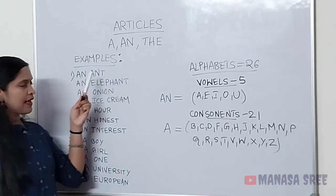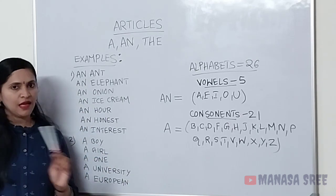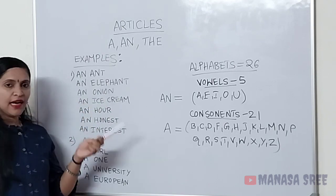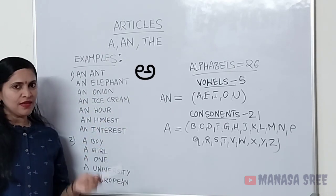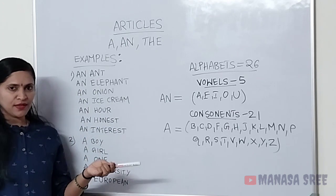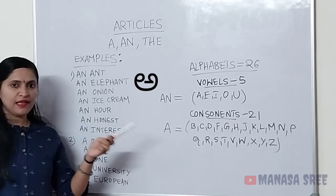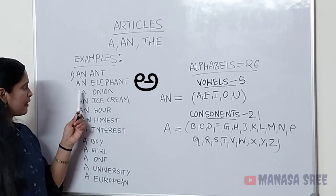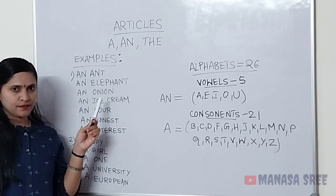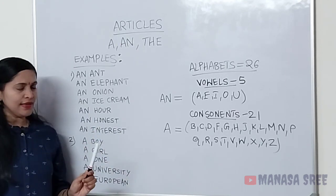And — 'a' is a vowel letter. So adhik e navu 'an' article na use maatthi vi. An and. And — 'a' sound — vowel sound. An and. Elephant — 'e' letter bandhi idhe — vowel letter. So adhik e 'an' use maatthi vi. An elephant. An and, an elephant — vowel sounds, so 'an' use maatthi vi.